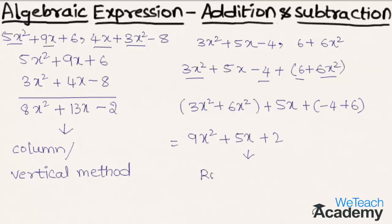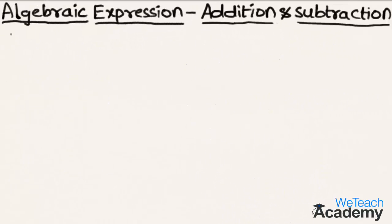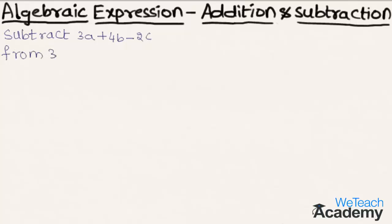We call this method the row or horizontal method. Now let us learn how to subtract algebraic expressions. Consider this example: subtract 3a plus 4b minus 2c from 3c plus 6a minus 2b. So here we have to subtract the first expression from the second expression.